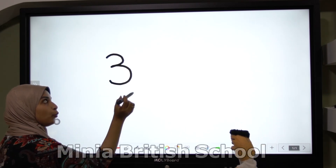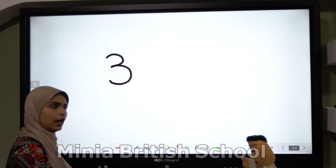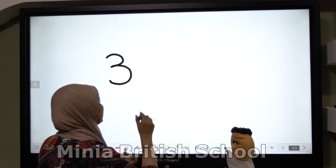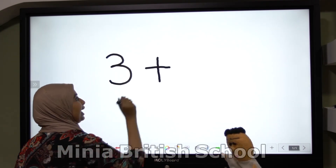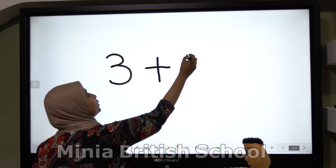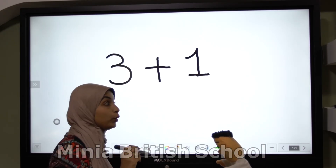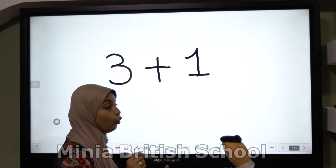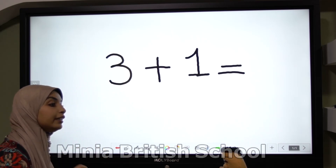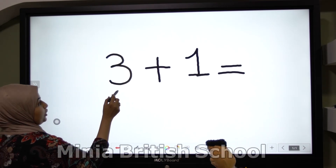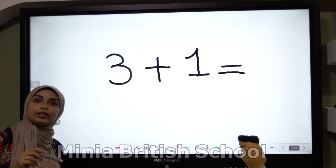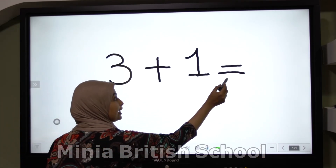And Tom, what we will put here? We will put what? Plus. Excellent! And choose any number, please, Tom. One. So we will write here another sign called equal. Another sign called what? Equal. Let's read this equation. Three plus one equal. All of you, Keiji, read with me: three plus one equal.